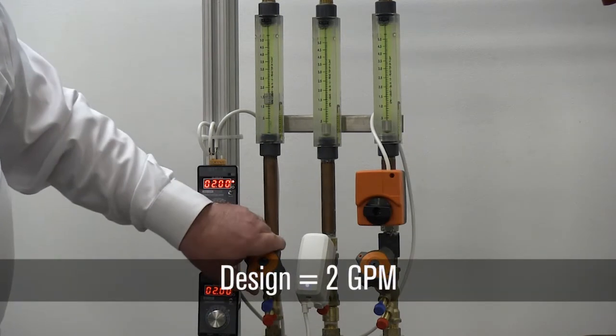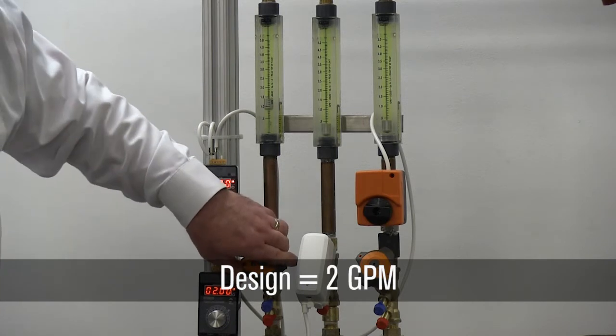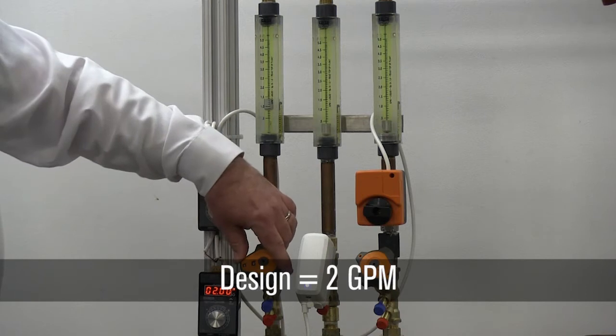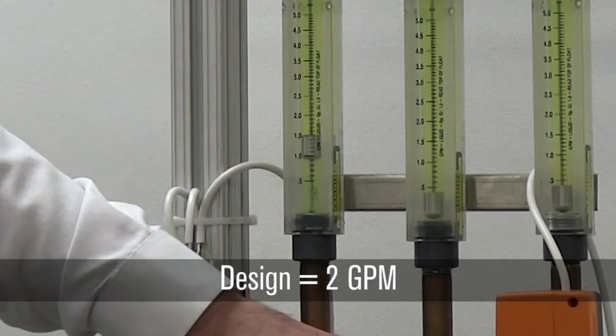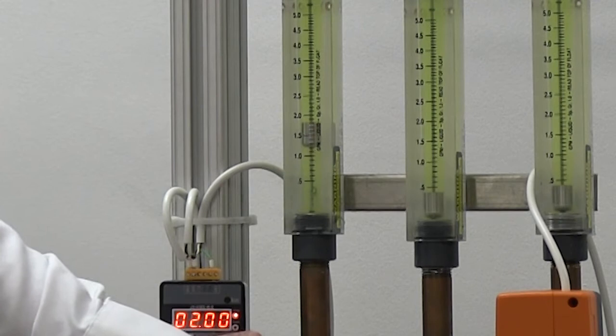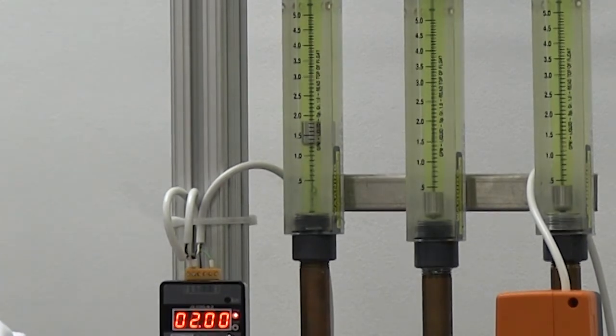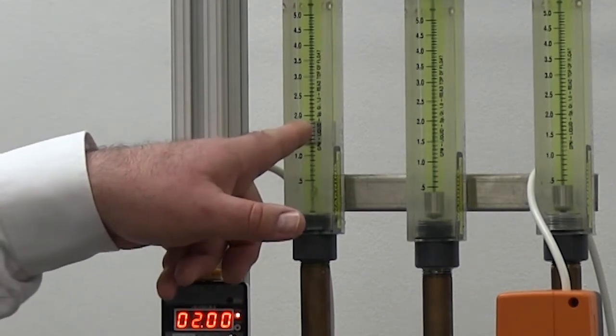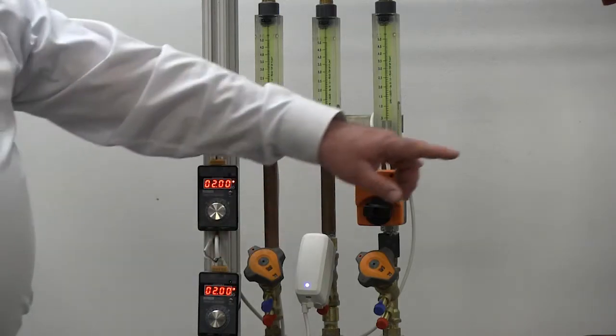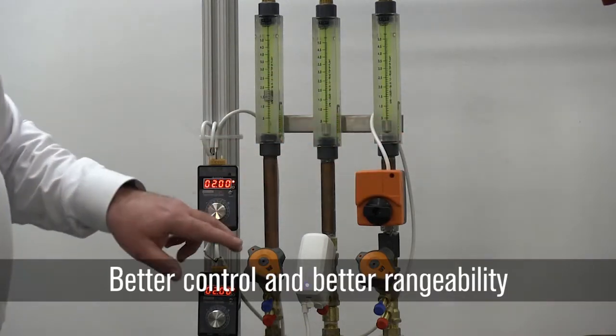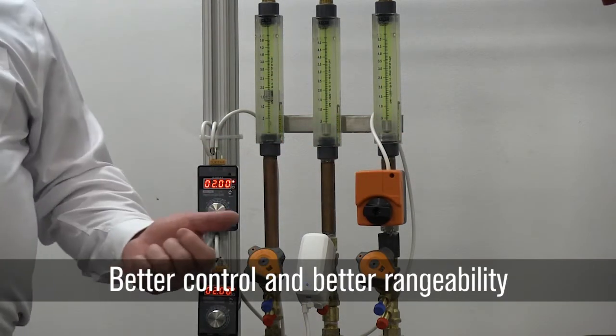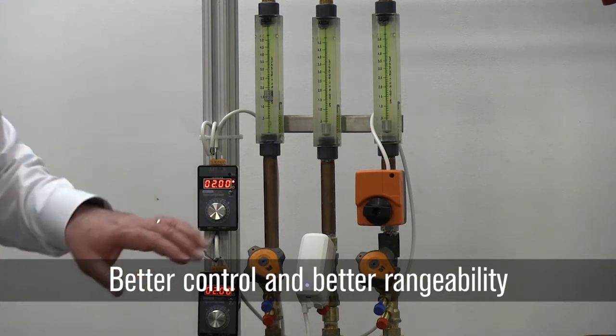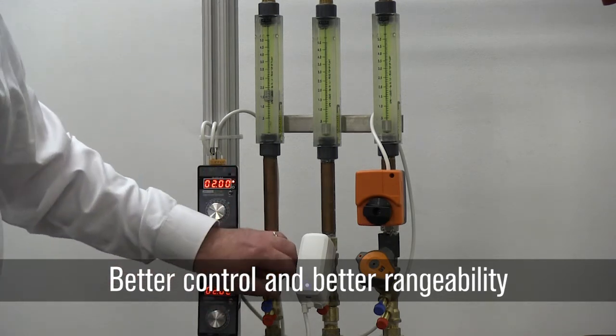Let's see the difference. So now I'm at my GPM and a half like I was before. I'm trying to get my design flow rate to two. Now I'm turning and I'm actually passing about 40 measurable positions on that hand wheel in order to get to that position. So now instead of being halfway in between two positions, I now have 40 different positions I can verify along the way to be able to bring myself up to my design flow rate. So much better control, much better rangeability.